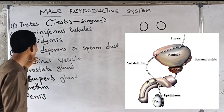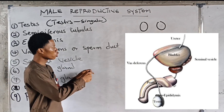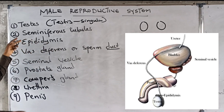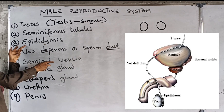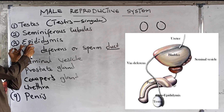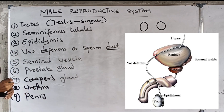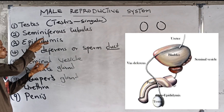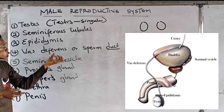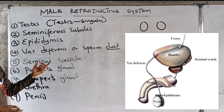Next we have the vas deferens, also called the sperm duct. In biology, a duct is like a tube — a passage. The vas deferens connects the epididymis to the seminal vesicle. It is a tube connecting the two structures. When the sperm matures in the epididymis, it moves from the epididymis to the seminal vesicle through the vas deferens.